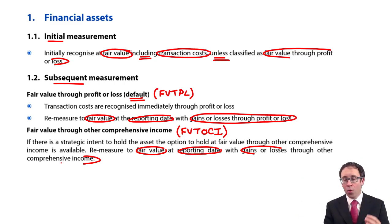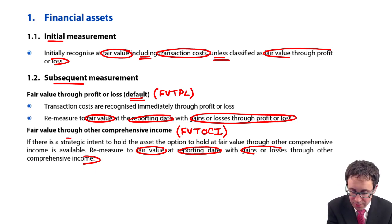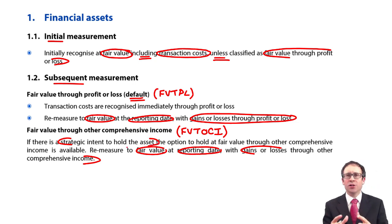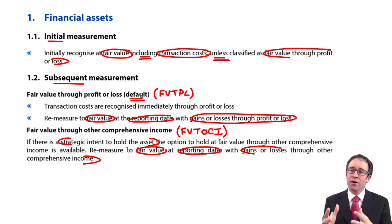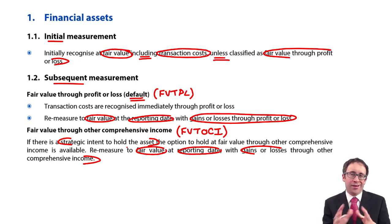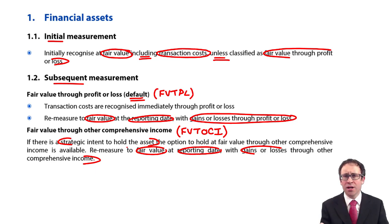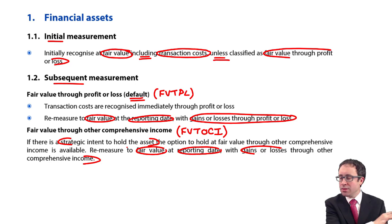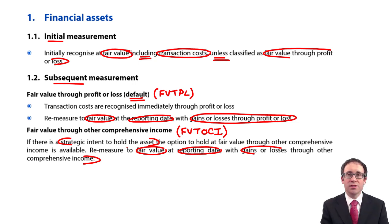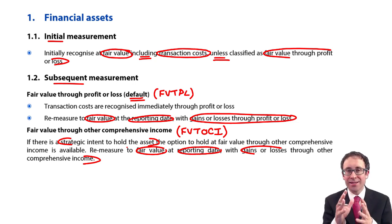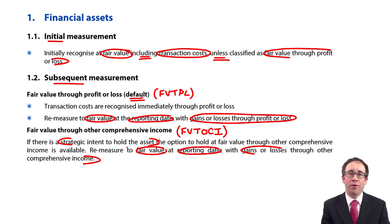We are going to hold the assets — there is a strategic intent to hold the asset, so we're not going to sell it in the short term. In the real world this brings in all sorts of judgments about how long before we consider it held for the long term — arguably an audit risk when you buy a new investment in equity shares that it could be classified incorrectly. But in the exam it will be quite clear: if it doesn't say anything about intent, the default category is fair value through profit or loss. If it says we intend to hold it for the foreseeable future, then we are designating it at initial inception as fair value through other comprehensive income.